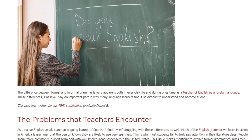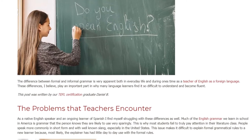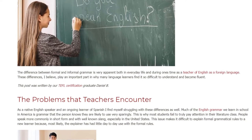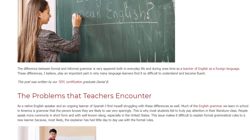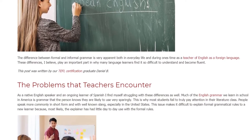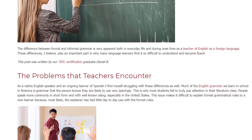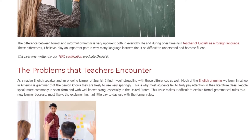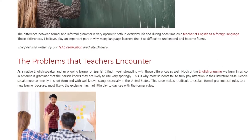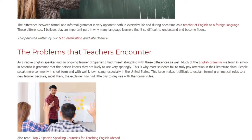As a native English speaker and an ongoing learner of Spanish, I find myself struggling with these differences as well. Much of the English grammar we learn in school in America is grammar that a person knows they are likely to use very sparingly. This is why most students fail to truly pay attention in their literature class. People speak more commonly in short form and with well-known slang, especially in the United States. This makes it difficult to explain formal grammatical rules to a new learner because the explainer has had little day-to-day use with the formal rules.